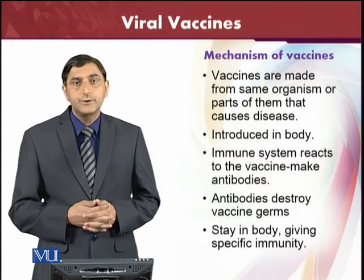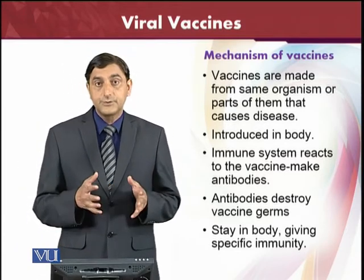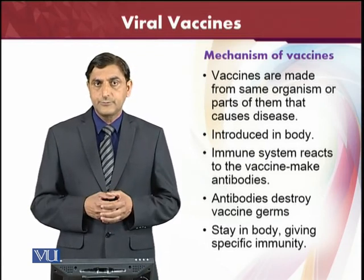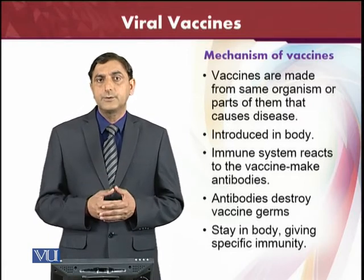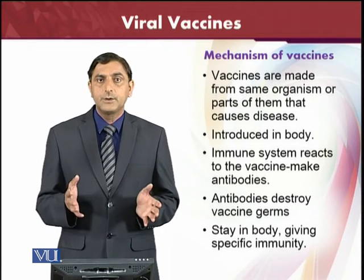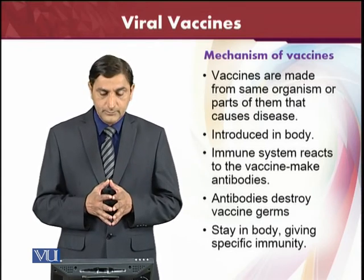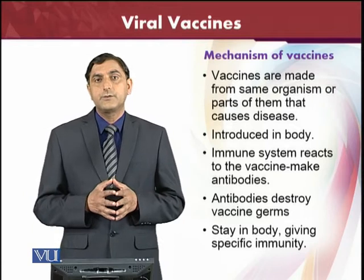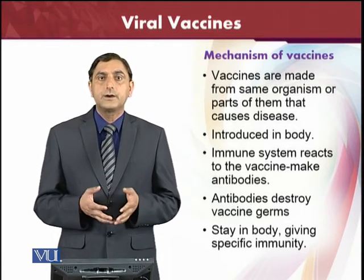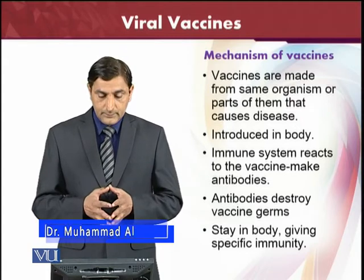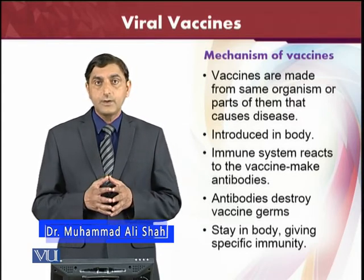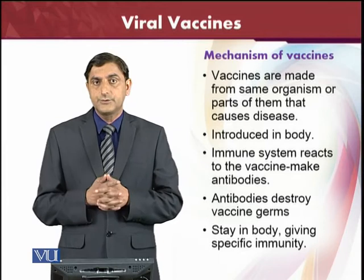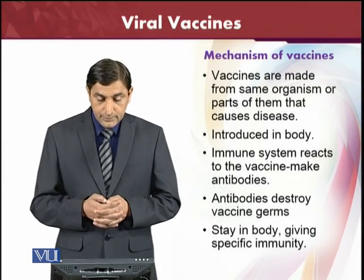Vaccines are made from the same organism, the same antigen, which are parts of the pathogen and which cause the disease. They may be toxoid vaccines, subunit vaccines, or the whole organism — killed or attenuated. This antigen is introduced inside the body. The normal immune system of the body will react against that specific kind of antigen, and then the vaccine makes the antibodies. The immune system will produce antibodies against any kind of foreign body that comes into contact, and these antibodies will destroy the vaccine germs.